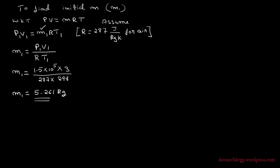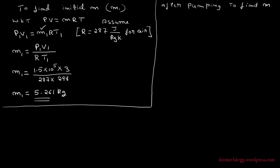Now let us find M2 — the total mass of air in the container after pumping. Using the same characteristic gas equation for the final condition: P2V2 = M2 × R × T2. Since R is constant for air, M2 = P2V2 / (R × T2). Substituting: P2 = 30 × 10⁵ N/m², V2 = 3 m³ (volume remains the same), R = 287, T2 = 333 Kelvin.